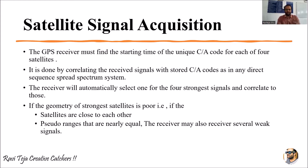If the geometry of the strongest satellite is poor — meaning there might be an error while receiving the signal through the GPS receiver — there can be some kind of signal loss, disturbance, noise, or interference due to which the GPS receiver may not receive the signal.